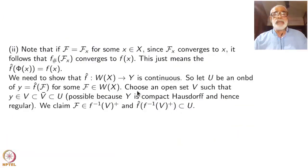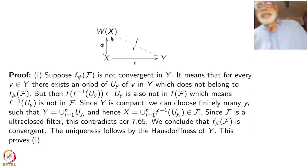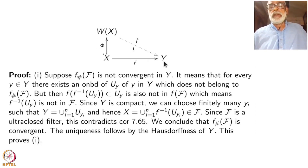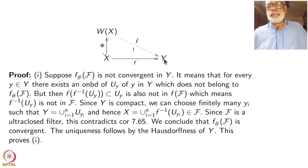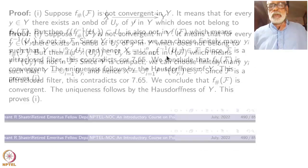This theorem is what we mean by the universal property of Wx. It would have been ideal to prove such a thing without y being Hausdorff — just a T1 space. Unfortunately, we are not able to do that. That is one of the drawbacks of Wallman compactification.